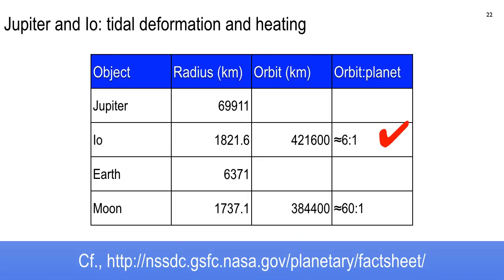Comet Shoemaker-Levy plowed into Jupiter about 20 years ago in the 1990s. It was a big nugget of ice, rock, and dust — a comet. But it got blown apart when it got too close to Jupiter. When it impacted Jupiter, it was a trail of impacts in Jupiter's atmosphere — bang, bang, bang, bang. That's because it was pulled apart by tidal forces — too close to Jupiter. The Roche limit depends on the size of the planet, the size of the comet or moon, whatever it is.